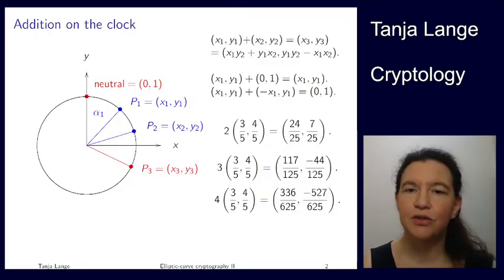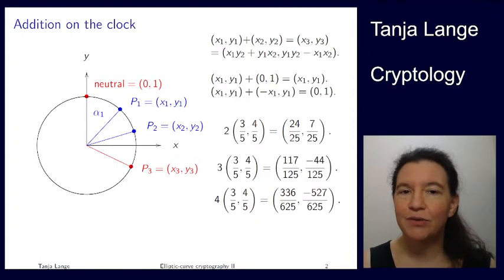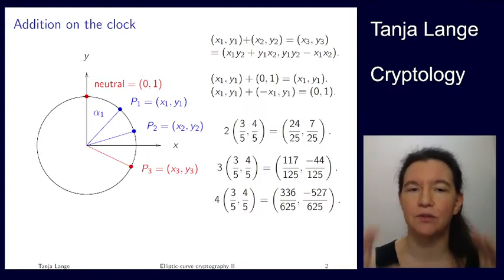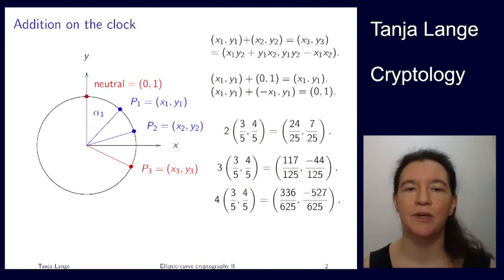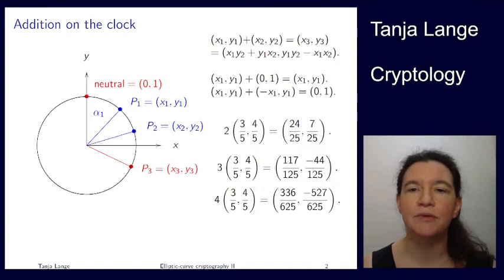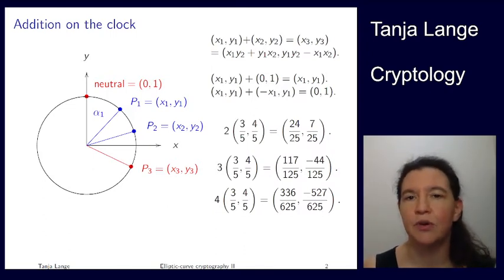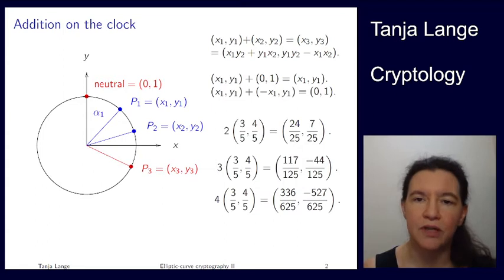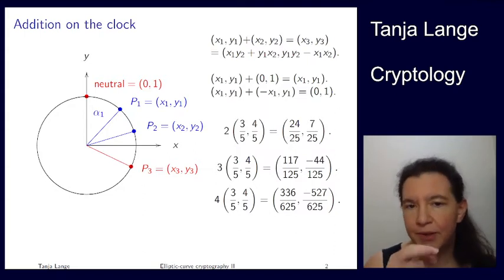In the last lecture, we introduced addition on the clock. Here's a picture: we have this circle and the 12 o'clock point is a neutral element. We started by adding angles and then went into the problem that it's not so easy to add complicated points like three-fifths, four-fifths. So we recovered coordinates for the addition. Up on the right corner here, you're seeing the addition law on the clock.